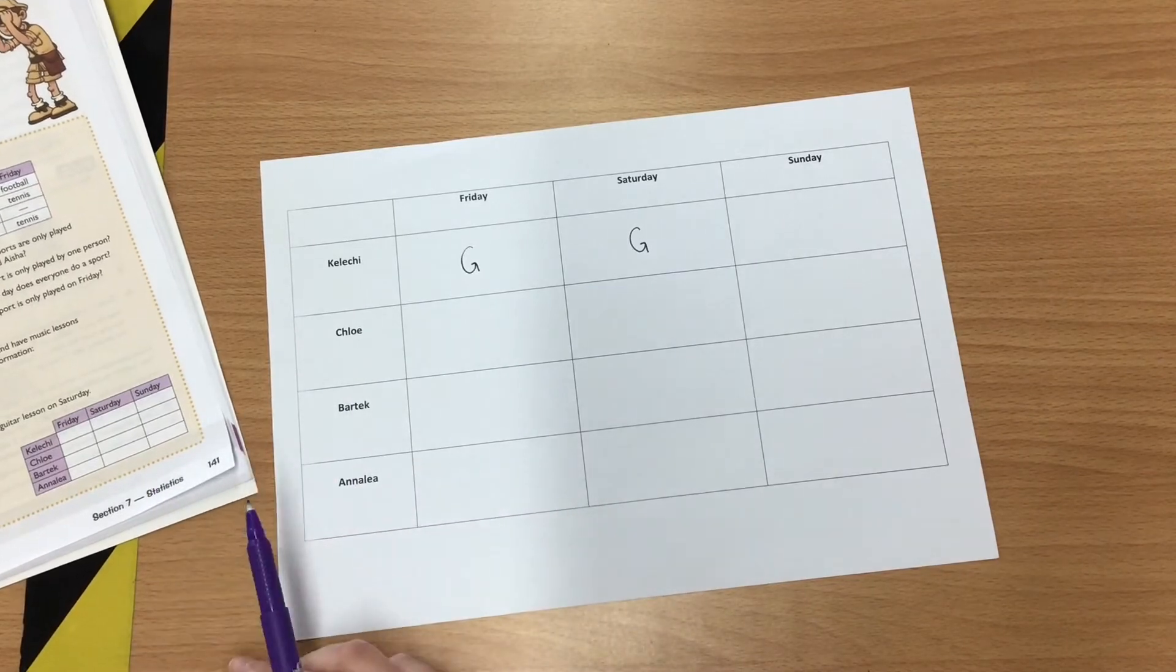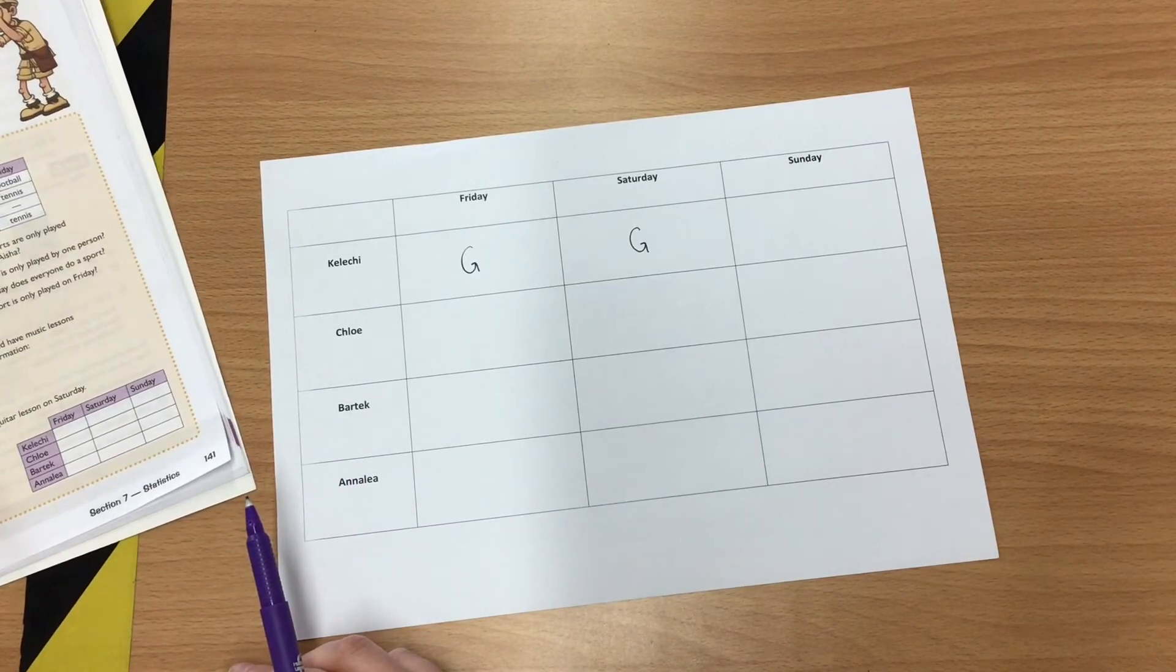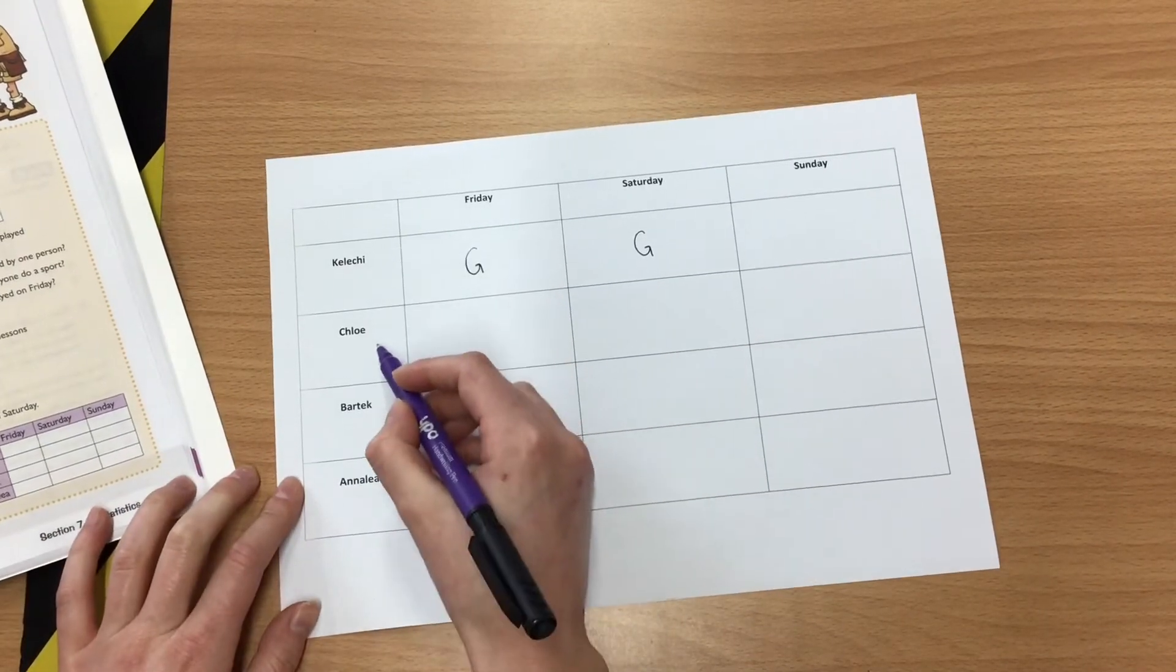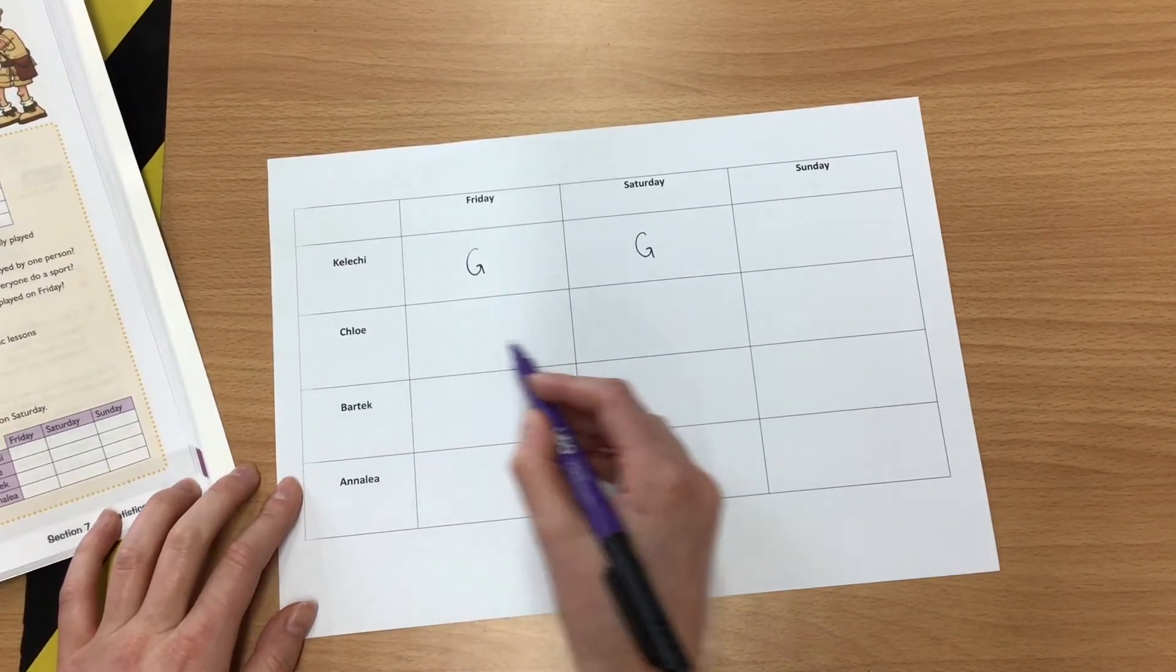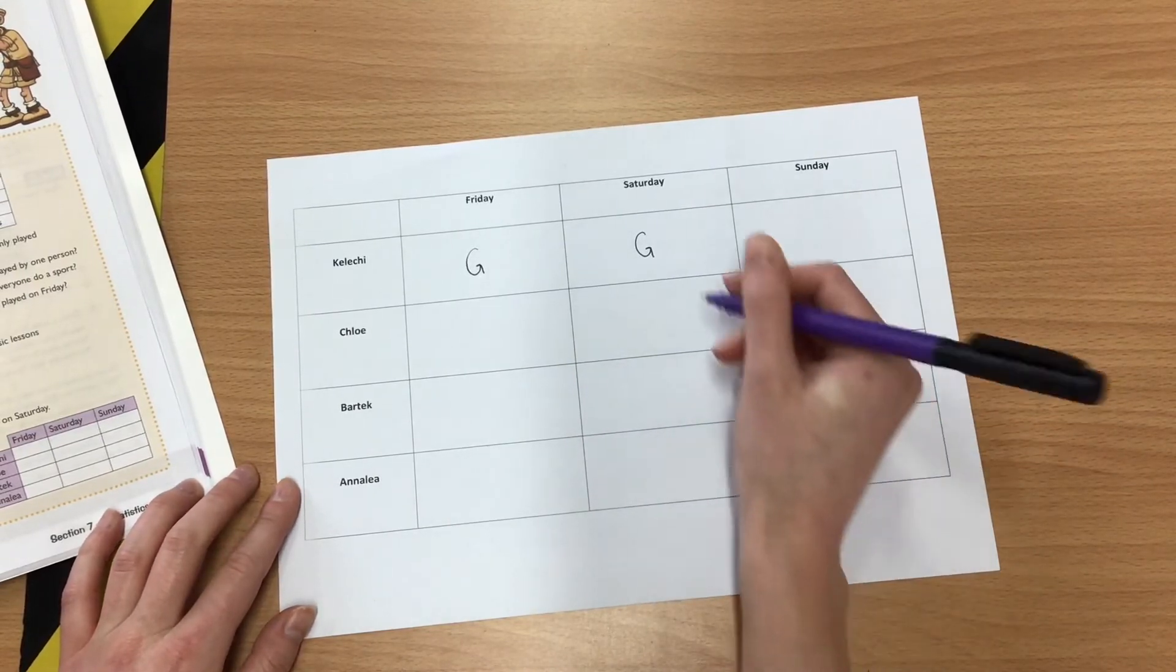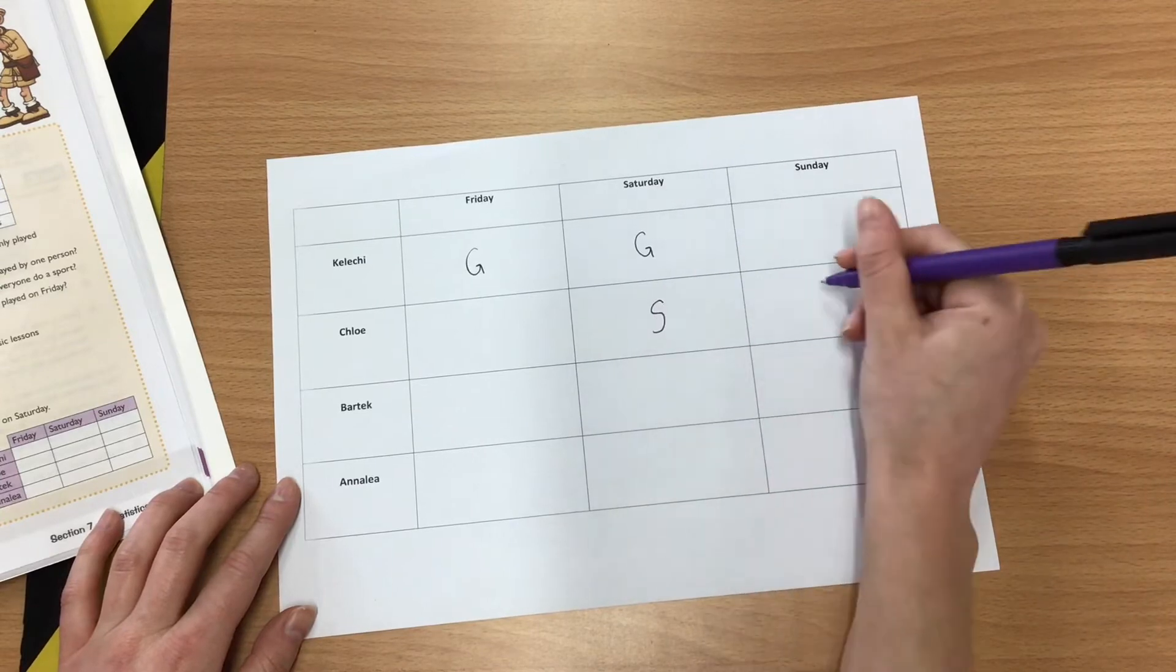My second bullet point says, Chloe has a singing lesson on Saturday and Sunday. So I need to go down to Chloe, then I go across to Saturday and Sunday, and I'm going to put an S for singing.